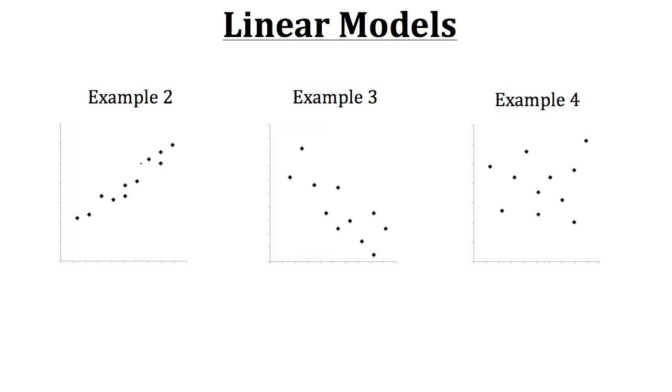Now first of all, with example two, you may notice that all these dots, or these various points from a specific set of data, seem to have an increasing type of trend to it. This is known as a positive trend. Now also more specifically you can see that the points are pretty close together and they seem to be making a defined line. So we could call this a strong positive trend.